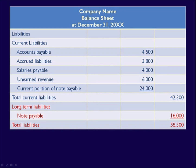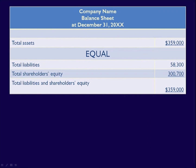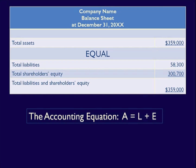Next is the shareholders' equity section. Details of the split between contributed capital and retained earnings are provided, with contributed capital always listed first followed by retained earnings. A subtotal of shareholders' equity is provided before a final total of all liabilities plus shareholders' equity. Notice something very important: total assets equal total liabilities plus shareholders' equity. This is called the accounting equation, which shows that economic resources are financed either through debt or liabilities, or equity from owners.